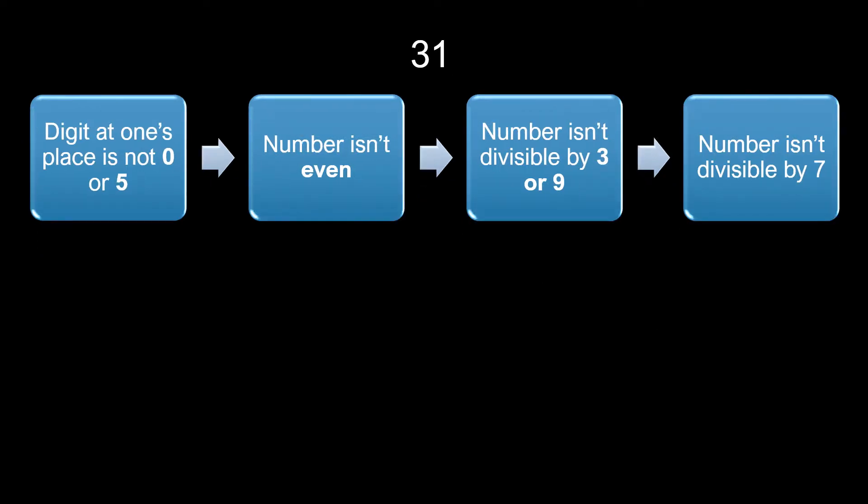Let's check another number: 31. First level - digit at one's place in 31 is 1, neither 0 nor 5. Level is clear. The number is odd, so this level is also clear. For checking divisibility by 3 or 9, we add the digits, which comes out to be 4. That means it is neither divisible by 3 nor by 9, so this level is also clear.